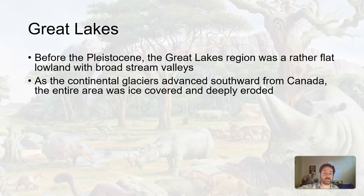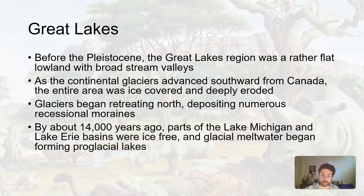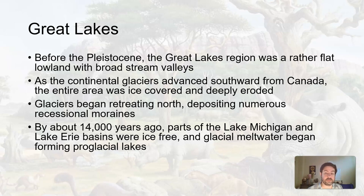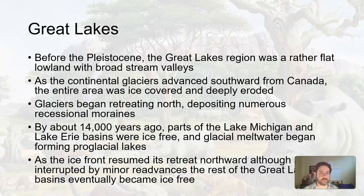In certain areas they really gouged out deep areas that would later be filled with melting water as the glacier recessed. By about 14,000 years ago, after the glaciers had begun to recess, part of Lake Michigan and Lake Erie basins were ice-free. Glacial meltwater began forming the initial lakes there. It's not still glacial water — this happened 14,000 years ago. The glacier carved it out; it's just filled with water now.